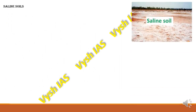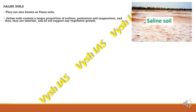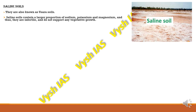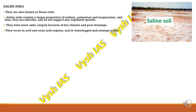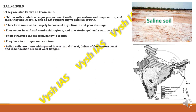Saline soils are very common in mangrove forest regions. They are also known as Usara soils and contain a larger portion of sodium, potassium, and magnesium. They become infertile and do not support vegetative growth. They have high salt content largely because of dry climate and poor drainage. They occur in arid and semi-arid regions, and where water is clogged, in stagnant water bodies and swampy areas. Their structure ranges from sandy to loamy and they lack in nitrogen and calcium. They are more widespread in western Gujarat, deltas of the eastern coast, and Sundarban areas in West Bengal.